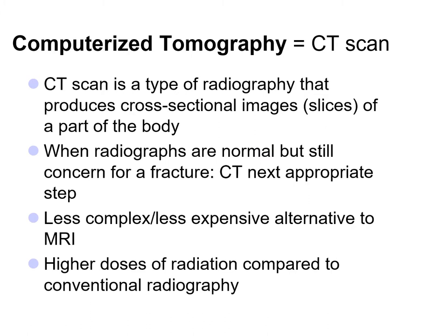Let's begin by discussing computerized tomography, or CT scans. CT scanning is a type of radiography that produces three-dimensional cross-sectional images of a part of the body. When radiographs come back normal but there's still concern for a fracture and your biggest concern is bony integrity, CT scan is the next appropriate modality. It's less complex, easier to get, and less expensive compared to MRI. One concern is that patients are exposed to higher doses of radiation compared to conventional radiography. CT is very effective at analyzing bone and other soft tissues.